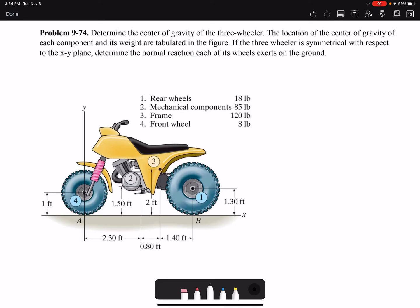Hello everyone, in this video I'm gonna solve problem 74 of chapter 9. Determine the center of gravity of the three-wheeler. The location of the center of gravity of each component and its weight are tabulated in the figure. If the three-wheeler is symmetrical with respect to XY plane, determine the normal reaction each of its wheels exerts on the ground.